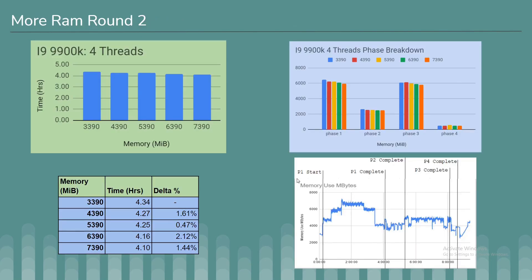So is there really a point in adding more RAM? I did a second test on the 9900k at four threads. You can see a little more results here, but the time impact is really not that noticeable. Comparing 3390 versus 7390, it's just within about 15 minutes difference.